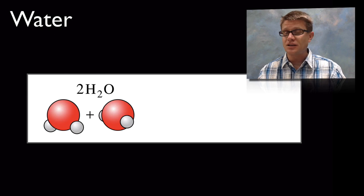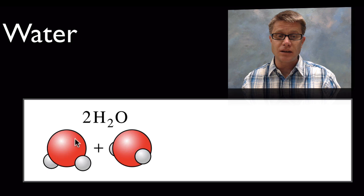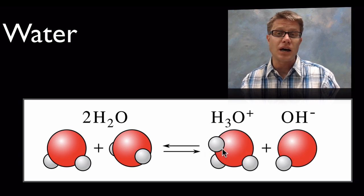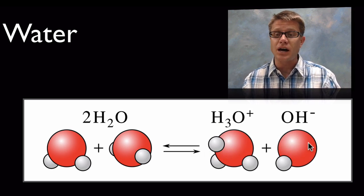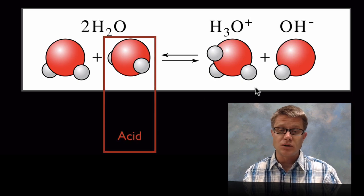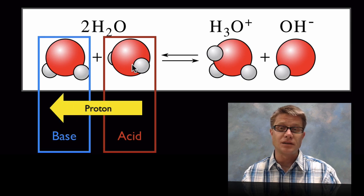Water is really interesting on a number of different levels. One reason is that if you have enough water around, it will actually start to transfer protons — there's a negative charge and a positive charge on the protons, so sometimes one of those protons will move over. What you create is a hydronium ion, which has a positive charge, and a hydroxyl ion, which has a negative charge. Using the Bronsted-Lowry definition, we're taking the acid and transferring a proton from the acid to the base.